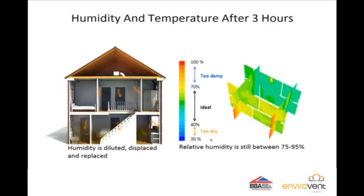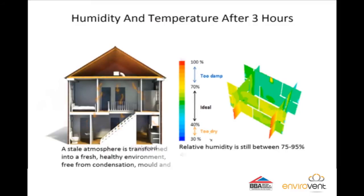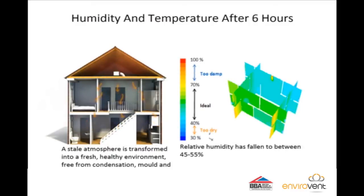After three hours the dilution and displacement process is well underway. The quality of the air is starting to improve as the fresh filtered air begins to dilute, displace and replace the airborne contaminants. After six hours the relative humidity is at 50% and is now stable. The air in the property is clean and fresh, and the warm air that is normally lost at ceiling level is being redistributed, making the property much more energy efficient.